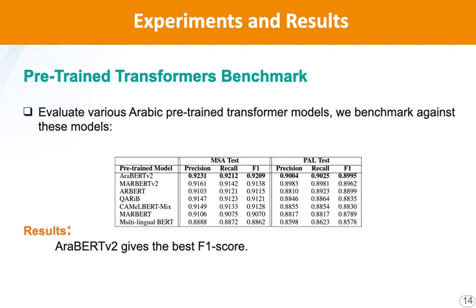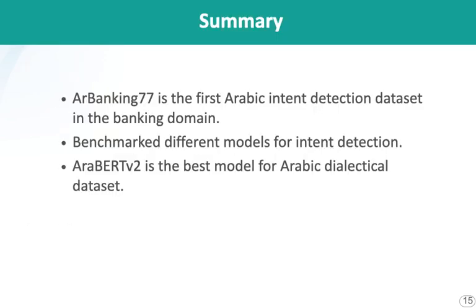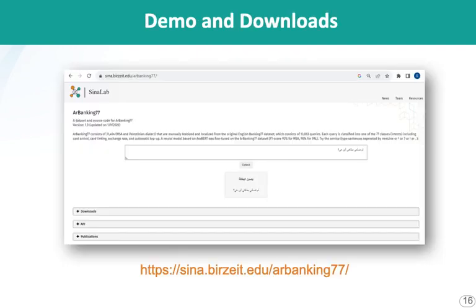When we train our model on our data, we see a big boost: 92 F1 on MSA and about 90 F1 on Palestinian. AraBERT V2 was the best-performing model. To conclude, we proposed the Arabic Banking77 intent detection dataset, benchmarked against multiple models, and AraBERT V2 was the best model. There is a demo — here is a link, be sure to go and give it a try. Thank you for listening.